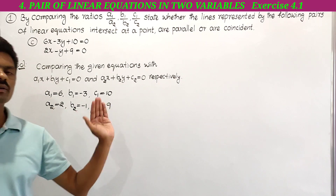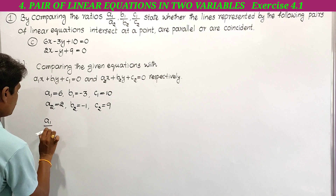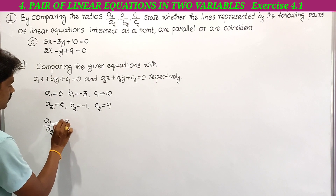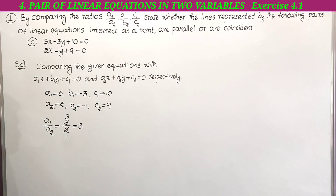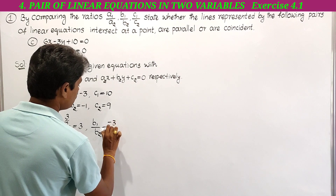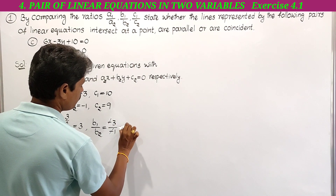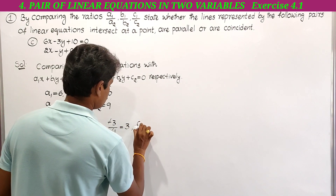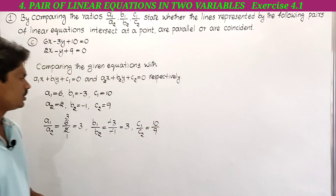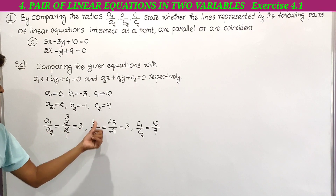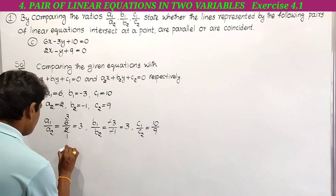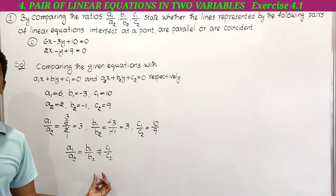Next we have to write the ratios a1 by a2, b1 by b2, and c1 by c2. a1 by a2 is equal to 6 by 2; 2 is the common factor, giving 3. Next, b1 by b2: b1 is minus 3 and b2 is minus 1; the negatives cancel, giving 3 by 1, also equal to 3. Next, c1 by c2: c1 is 10 and c2 is 9, so c1 by c2 is 10 by 9. Here a1 by a2 equals 3, b1 by b2 equals 3, but c1 by c2 equals 10 by 9. Therefore a1 by a2 is equal to b1 by b2 but not equal to c1 by c2, so we can say the given pair of equations are parallel lines.